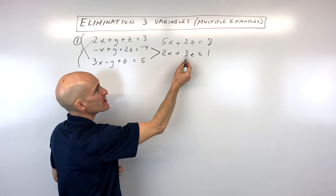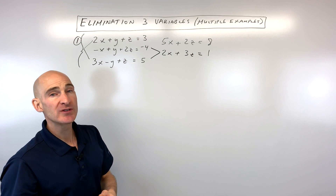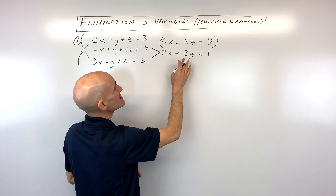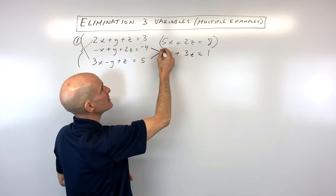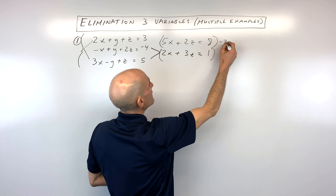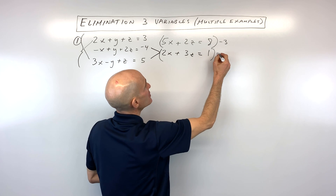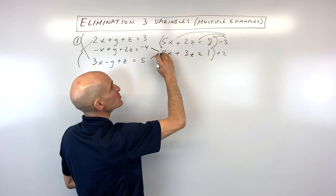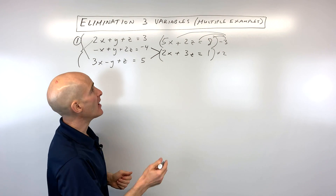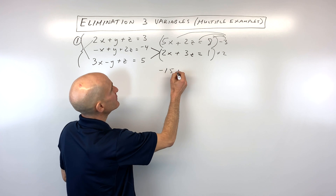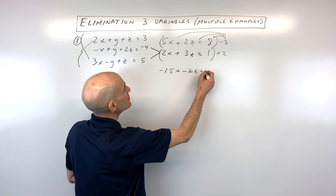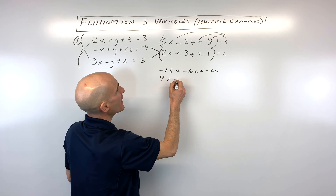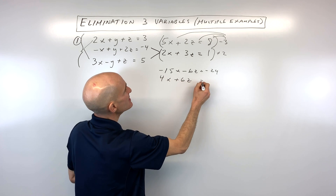The smallest number that both 2 and 3 go into is 6 — the lowest common multiple. I'm going to try to get one equation to have a positive 6z and the other a negative 6z. So I'll multiply the top equation by negative 3 and the bottom equation by positive 2, distributing to each of the terms on both sides to keep it balanced. That gives us negative 15x minus 6z equals negative 24, and distributing the 2 gives us positive 4x plus 6z equals 2.